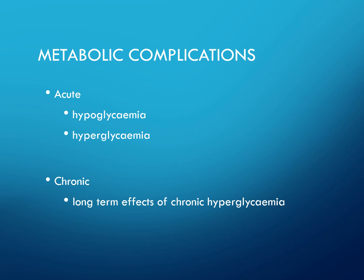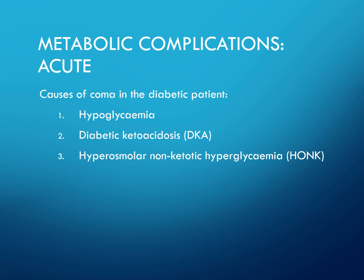From diabetes, you can also have metabolic complications such as acute hypoglycaemia or hyperglycaemia, as well as chronic metabolic complications involving long-term effects of chronic hyperglycaemia. Looking at the acute metabolic complications, causes of coma in a diabetic patient include hypoglycaemia, diabetic ketoacidosis, and hyperosmolar non-ketotic coma.